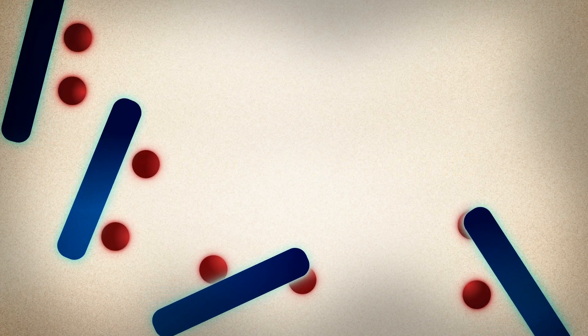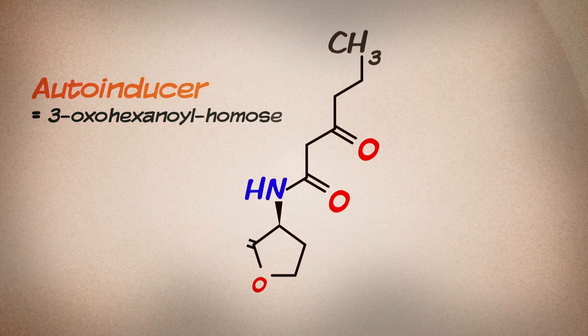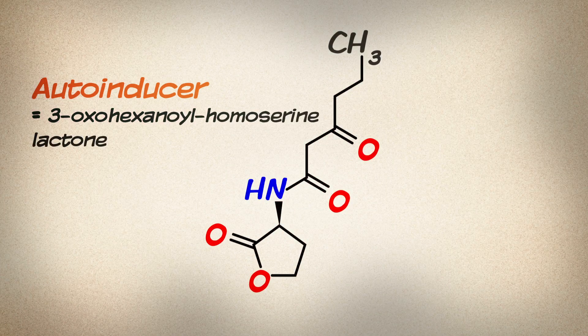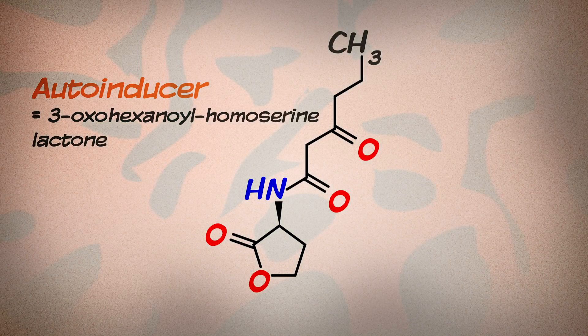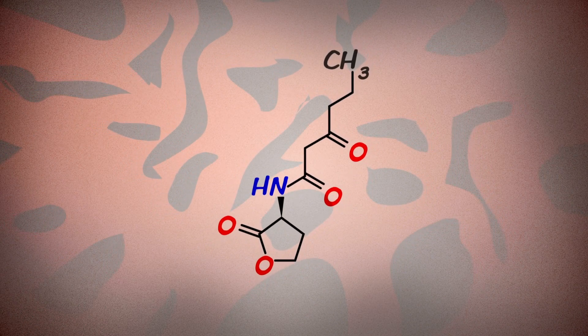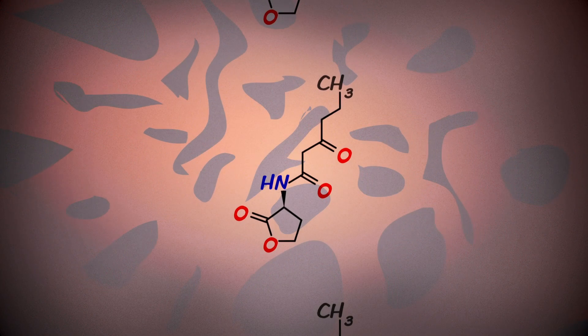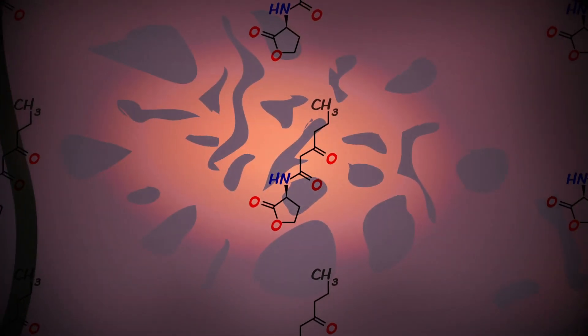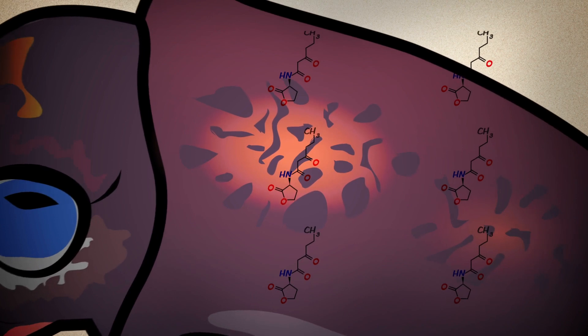Each bacterium produces a chemical signal called the auto-inducer. The more bacteria there are, the more auto-inducer there will be. If those bacteria are growing in a confined space, like a flask or the light organ of a squid, the amount of auto-inducer will start to build up.